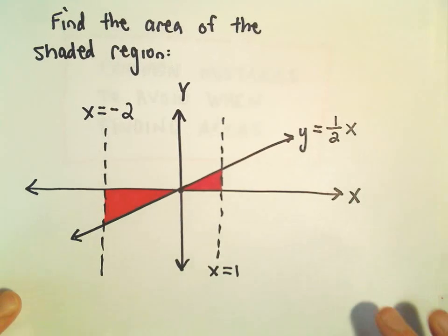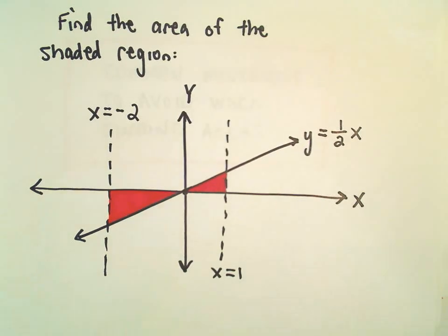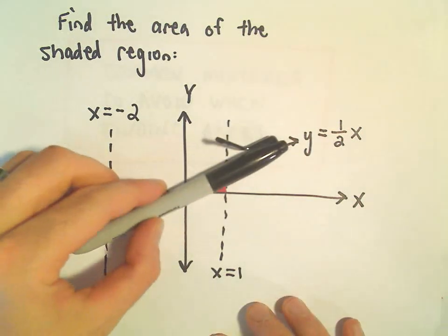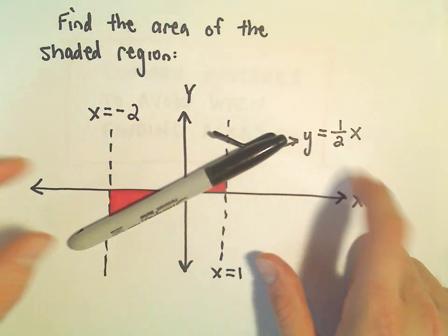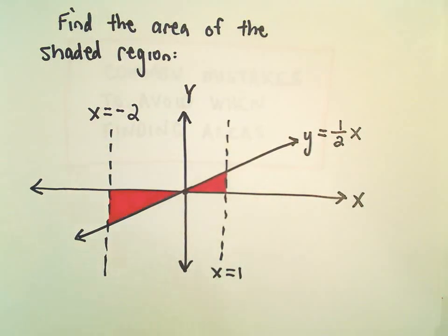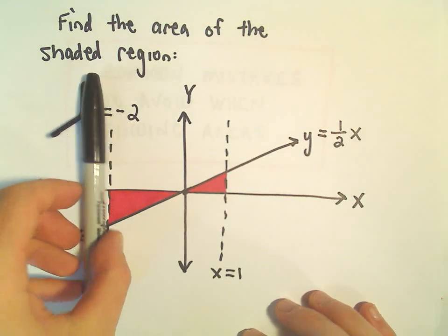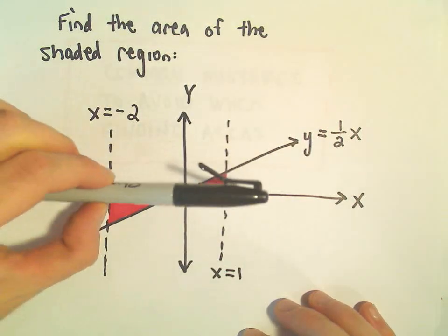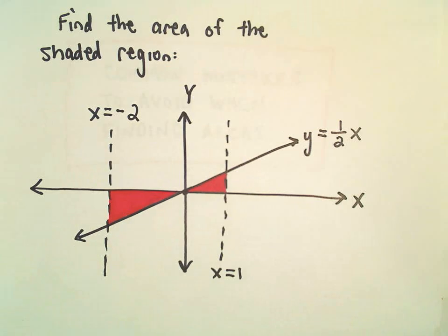Okay, here we're going to do another area problem. We're going to find the shaded area. It's bounded by the curve y equals 1 over 2x, and then by the line x equals negative 2, x equals 1, and then the x-axis, so the line y equals 0.